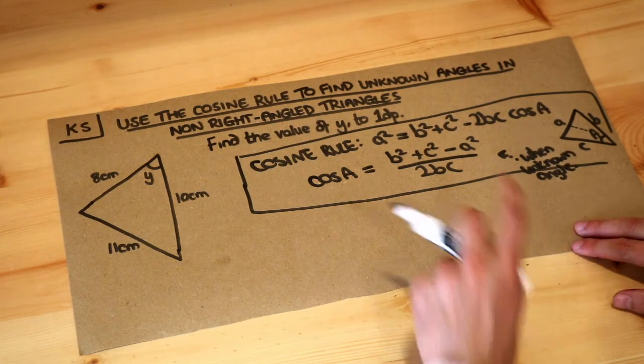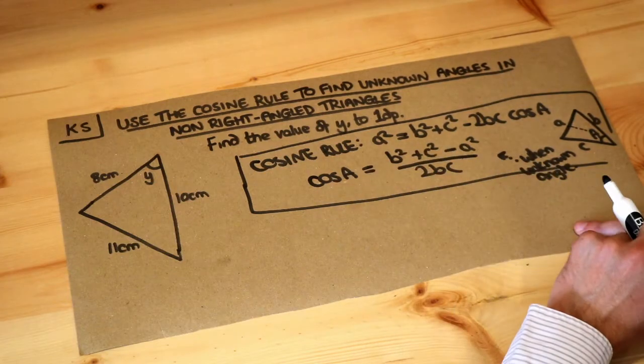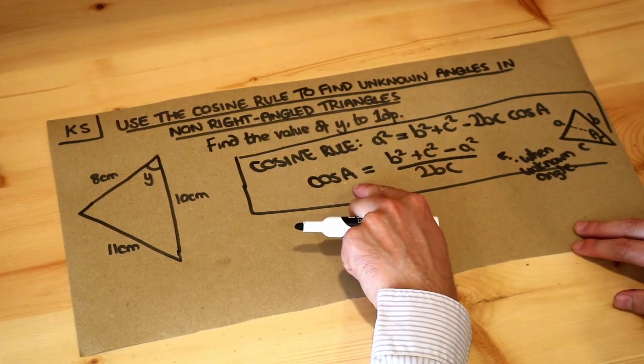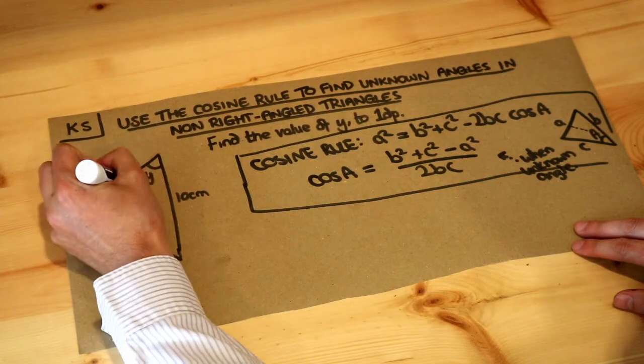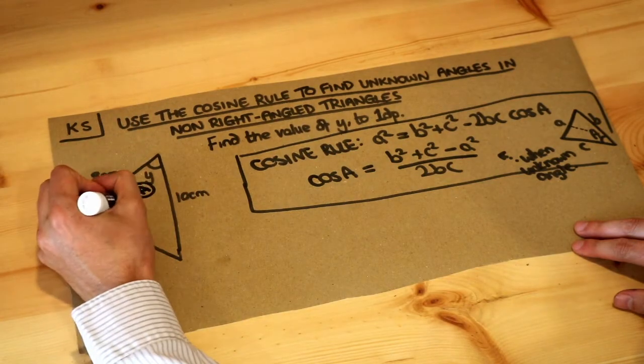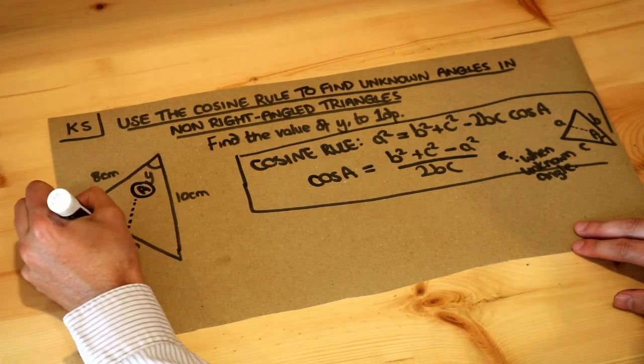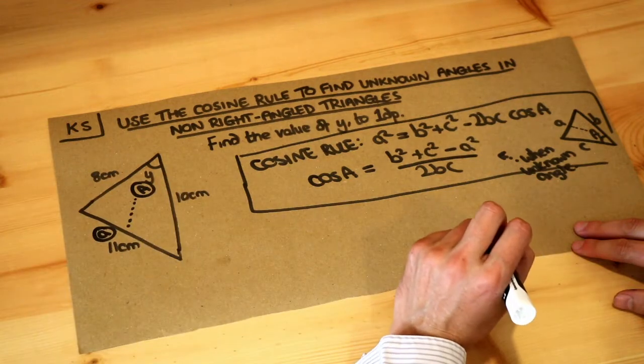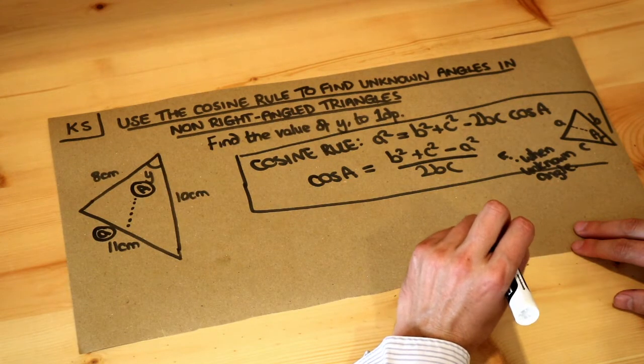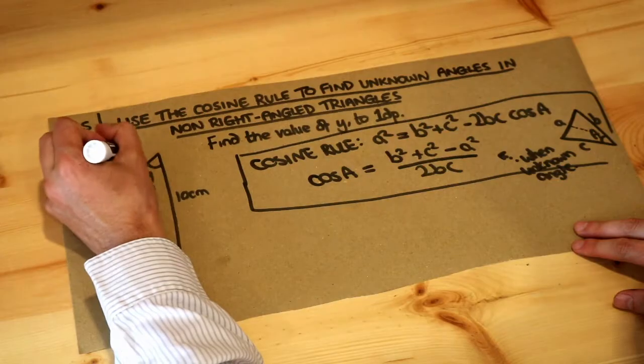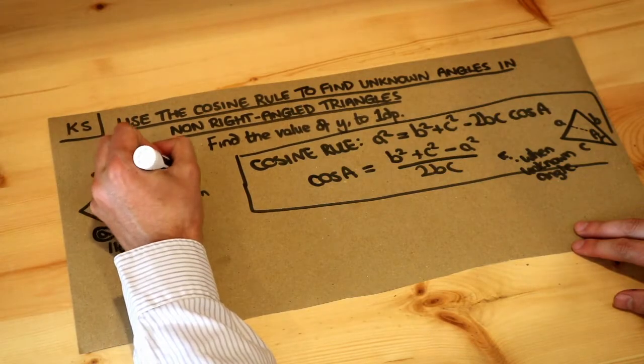So we can now label the sides and just substitute into this formula. Now the only angle here is the capital A, so I'm going to label that angle as capital A which means the opposite side would be little a, that's how the naming convention works for non-right-angle triangles. And then the two other sides as we saw in the previous video, just B and C, it doesn't matter which way round they go.